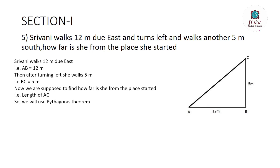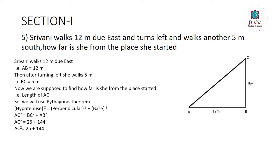Using Pythagoras' theorem: AC² = BC² + AB². So AC² = 25 + 144 = 169. Therefore AC = √169 = 13 meters. Srivani is 13 meters from where she started.